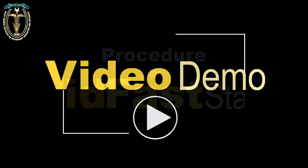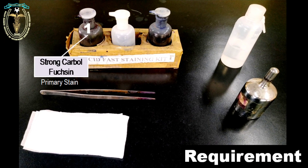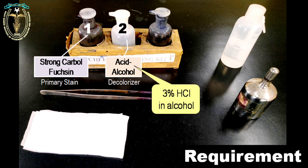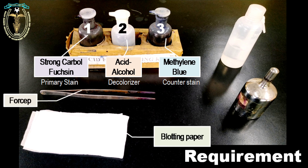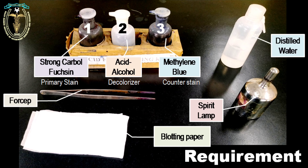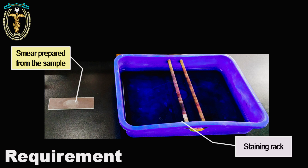The demonstration — the procedure for the acid fast staining technique. The materials required are: the strong carbol fuchsin staining solution, which is used as a primary stain; the acid alcohol, used as a decolorizer — prepared using 3% hydrochloric acid and 95% alcohol; and the Leffler's methylene blue staining solution, which is used as a counter stain. Apart from this, the other requirements are forceps, blotting paper, spirit lamp, distilled water, and the smear prepared from the sample, which is air dried and heat fixed. And lastly, the staining rack.